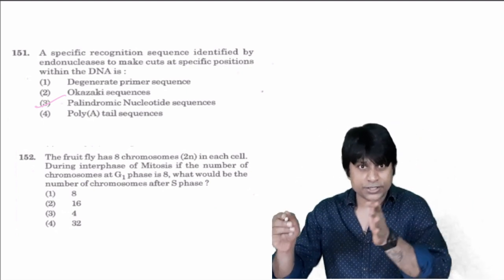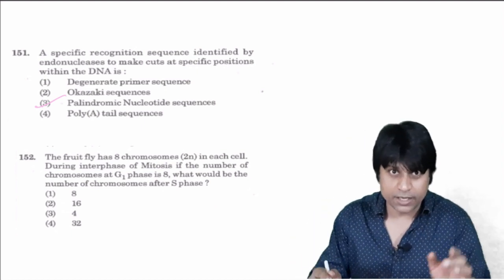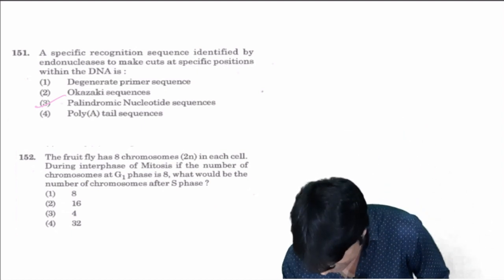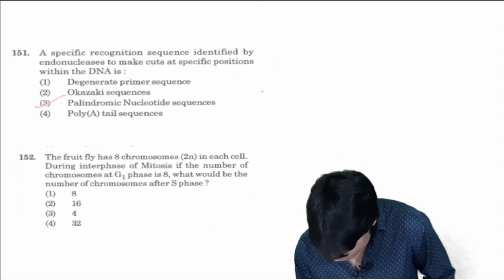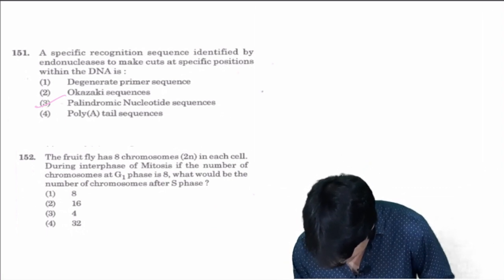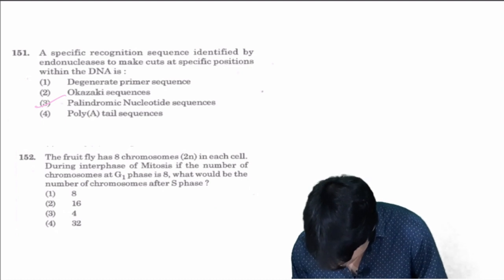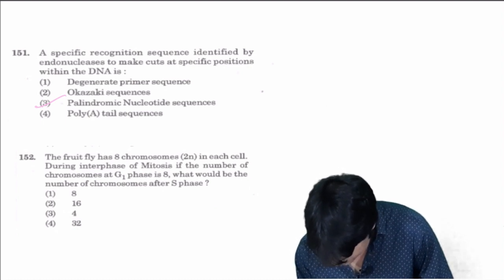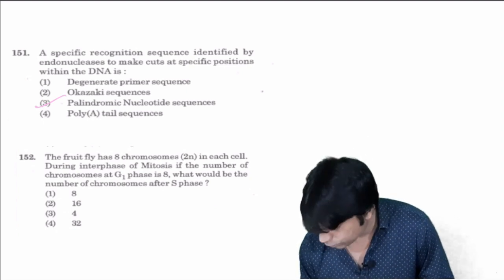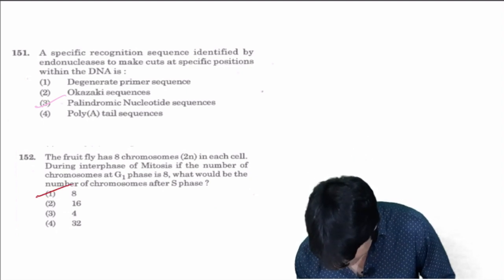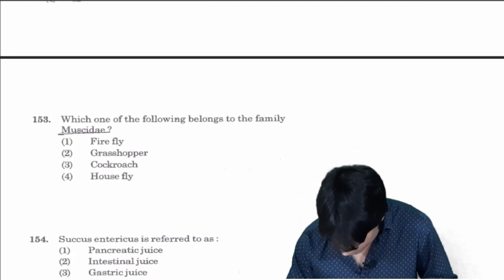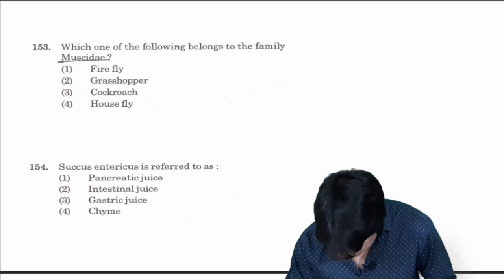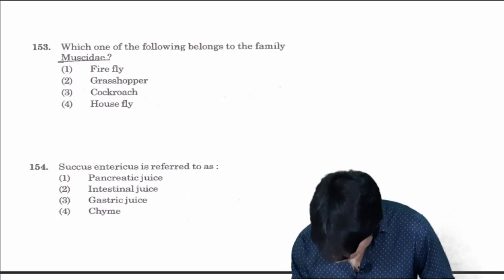Next, fruit fly has eight chromosomes in each cell during interphase of mitosis. If the number of chromosomes at G1 phase is eight, what would be the number of chromosomes after S phase? The number of chromosomes would remain same in the daughter cells also, so answer is one.